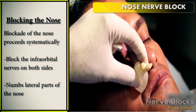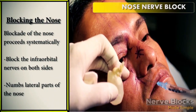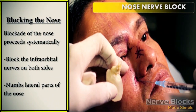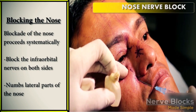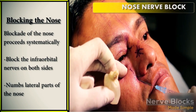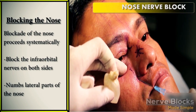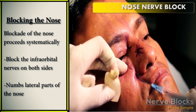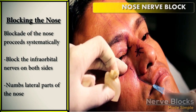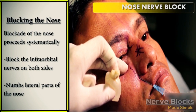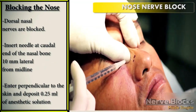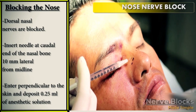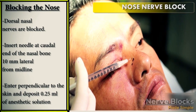Blockade of the nose proceeds systematically. First, block the infraorbital nerves on both sides to anesthetize the lateral parts of the nasal side walls and the alae. Next, proceed to block the dorsal nasal nerves.